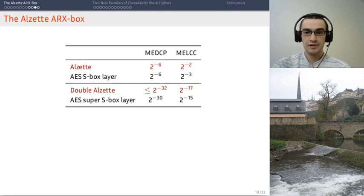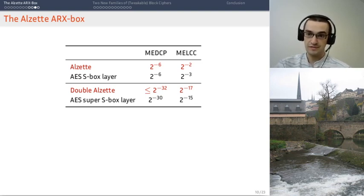So, in the end, the results for ALZET are as follows. Basically, it kind of behaves like an AES round. So, one iteration of ALZET has similar differential and linear properties. And two iterations of ALZET have similar properties to two rounds of AES. So, that's one super S-box in this case.